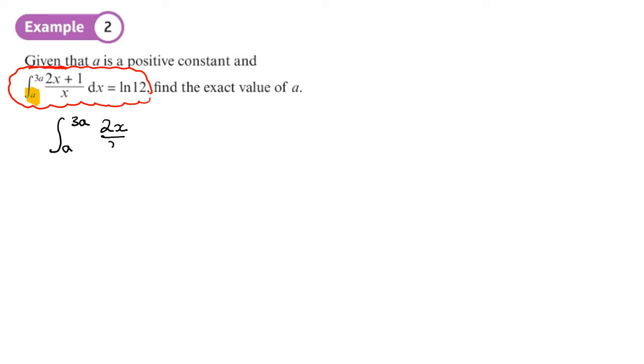First thing we need to do is to write this in a form that we can integrate. Now since we've got two things over the same denominator, you can write that as 2x over x plus 1 over x dx. From there, the 2x over x, you divide the top and the bottom by x, just leaves you with 2. So you've got 2 plus 1 over x dx. So we've got limits, let's integrate that. The 2 becomes 2x, the 1 over x becomes log modulus x, and our limits are a and 3a.